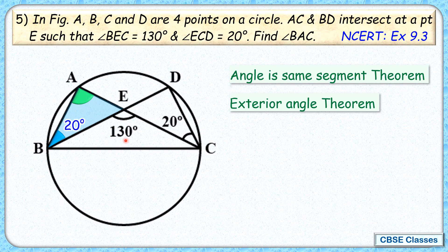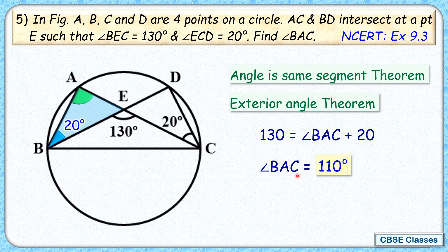So we can say 130 degrees equals 20 plus angle BAC. Angle BAC is what we have to find. Simplifying, we get angle BAC as 110 degrees, and that's our answer. I hope you enjoyed the solution. I will see you in the next video. Till then, tata bye bye.